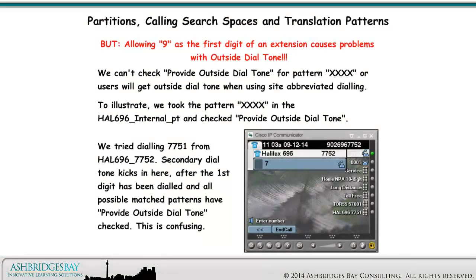But allowing 9 as the first digit of an extension causes problems with outside dial tone. We can't check Provide Outside Dial Tone for pattern XXXXX, or users will get outside dial tone when using site abbreviated dialing. To illustrate, we took the pattern XXXXX in the HAL 696 internal partition and checked Provide Outside Dial Tone.